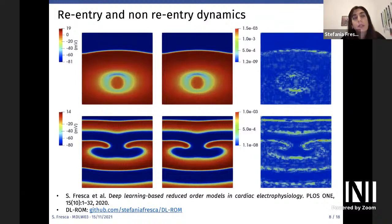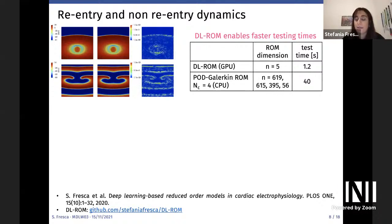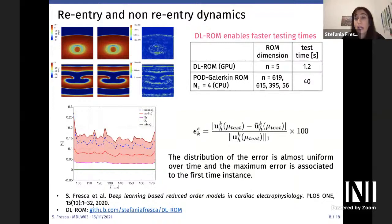We then increased the complexity by considering both re-entry and non-re-entry dynamics, achieved by enlarging the parameter space dimension. For the same level of accuracy, the DL-ROM technique enables faster testing times: by setting its dimension to 5, in contrast to the maximum dimension of a local POD-Galerkin ROM equal to 619, we achieve a speedup of almost 35. An error analysis fixing a testing parameter instance and examining the error distribution over time shows it is almost uniform, with maximum error at the first time instances, which are the most different over the parameter space.